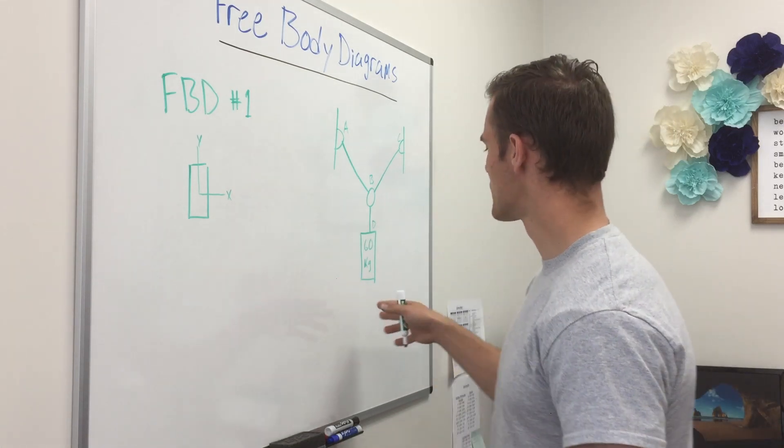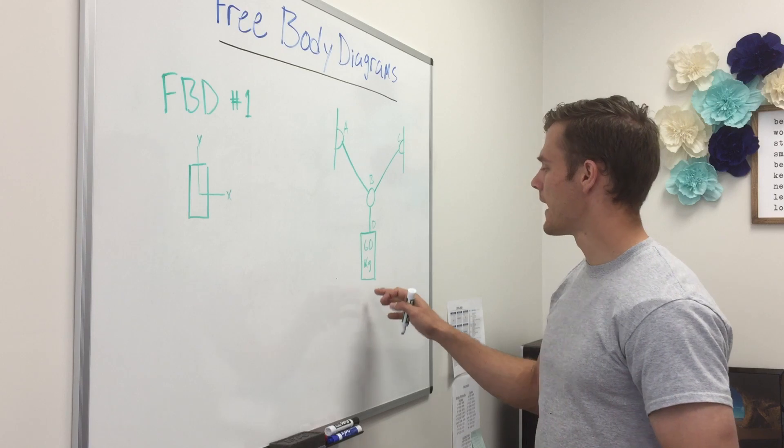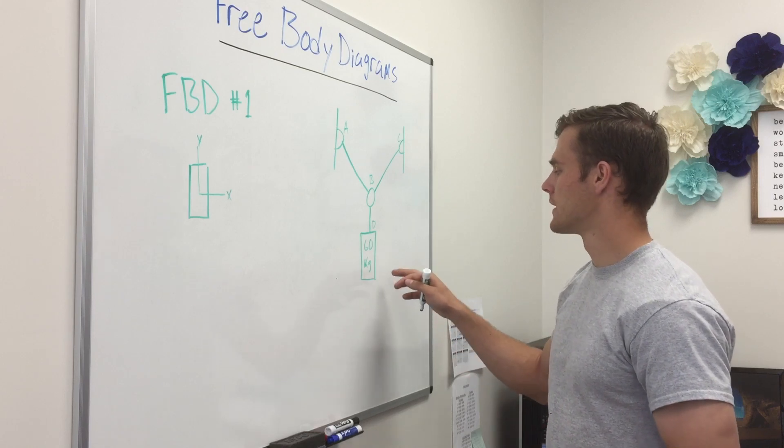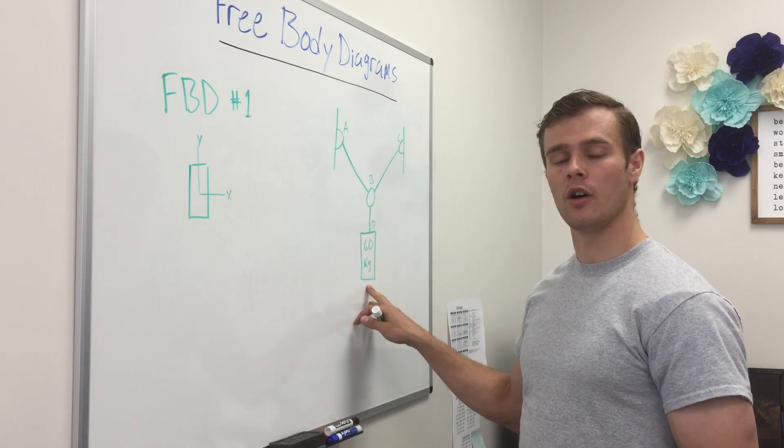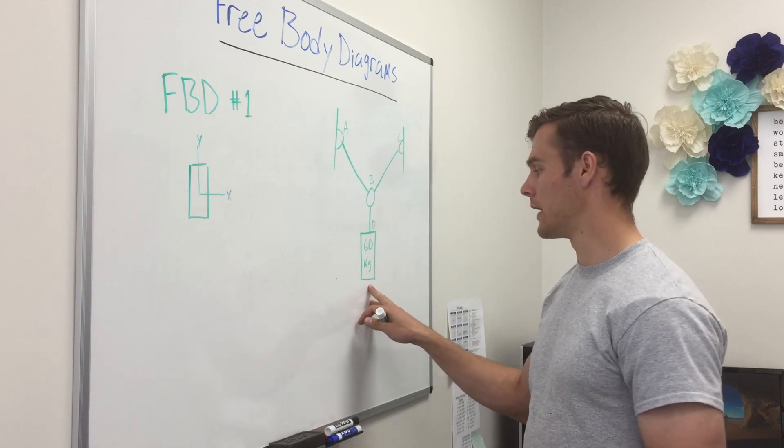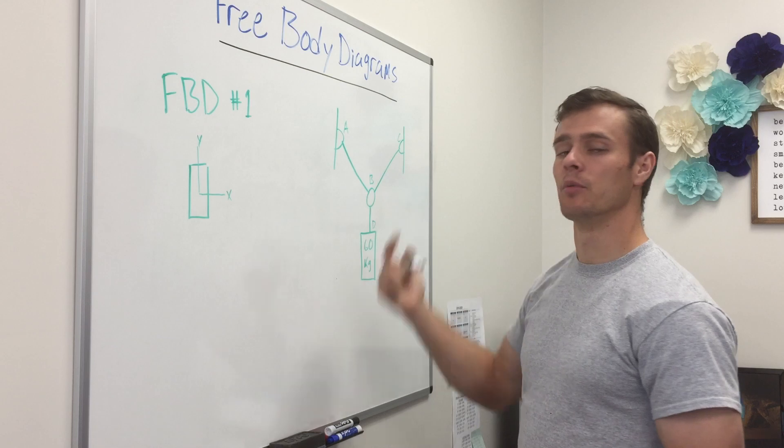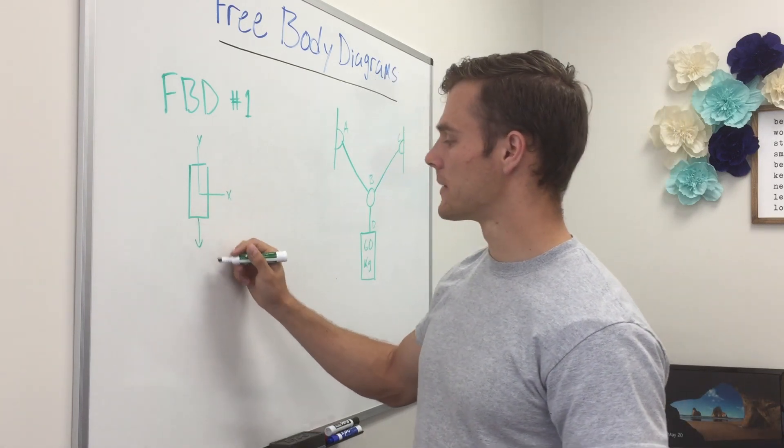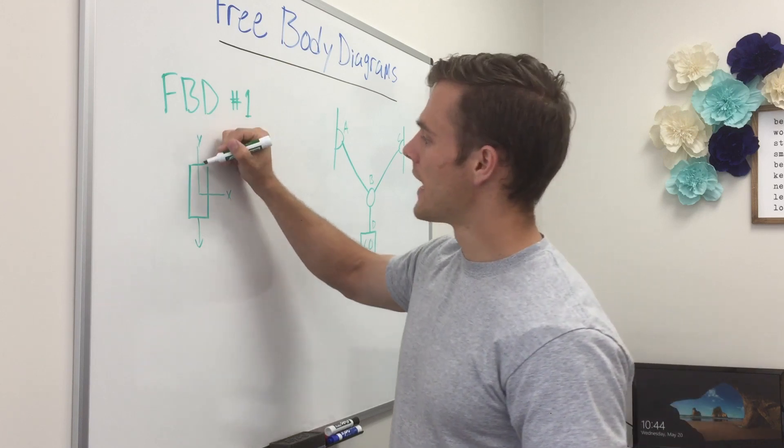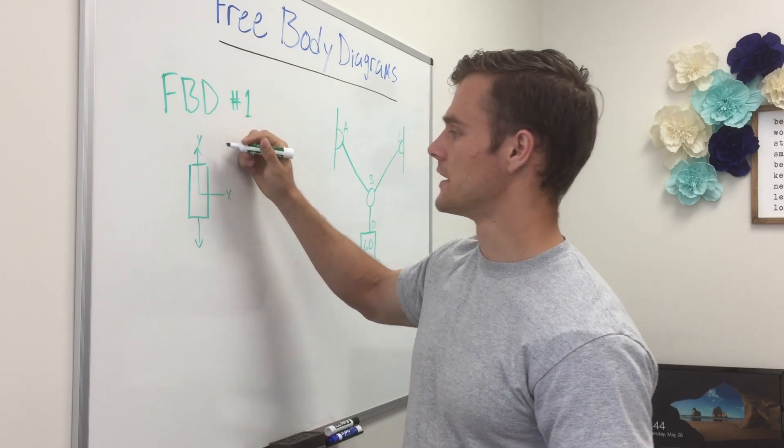And so we can see here that there's not really any forces in the x direction acting on this weight. All you have is gravity pulling down on the weight and the tension in the cable pulling up. So we'll draw that as an arrow coming down as gravity and the arrow coming up as the tension in the rope.